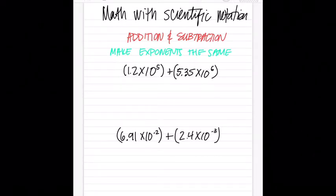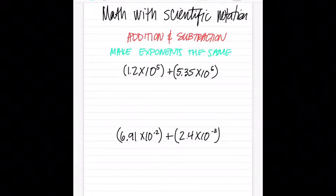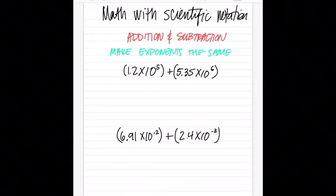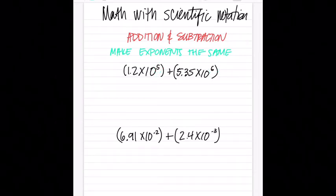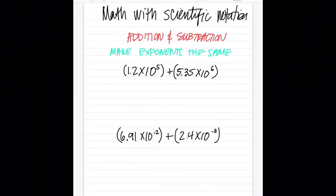The rule for doing addition and subtraction with scientific notation is to make the exponents the same — that's the first question you need to ask yourself. Looking at problem one, I've got a five and a six — they're not the same, so I need to make them the same. Now here's the rule we came up with. You have to follow it directly every single time, or it won't work.